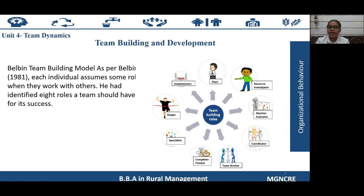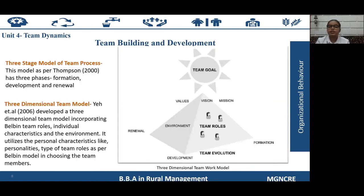The next model is the three-stage model of team process given by Thompson. It has three phases: formation, development, and renewal. In the first stage of formation, the team frames its rules and regulations and sets goals. In the second stage of development, members engage in tasks to achieve those goals. In the final stage of renewal, the team prepares for new tasks and gets ready to face new challenges.